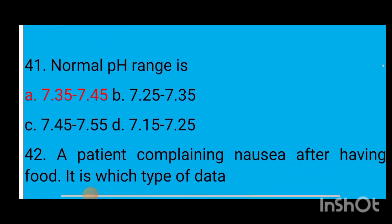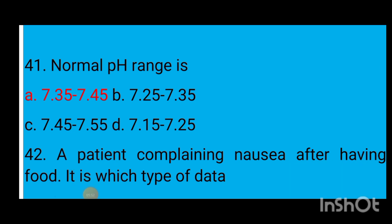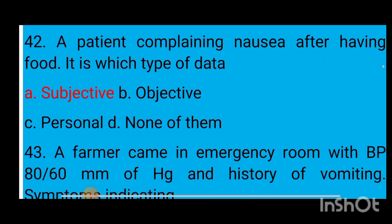Question number 41: Normal pH range is option A 7.35 to 7.45, option B 7.25 to 7.35, option C 7.45 to 7.55, option D 7.15 to 7.25. The correct answer is option A — 7.35 to 7.45. Then question number 42.